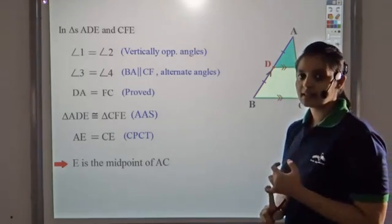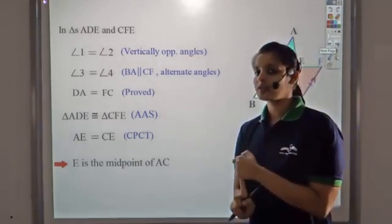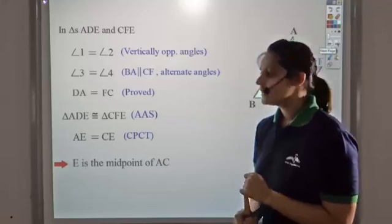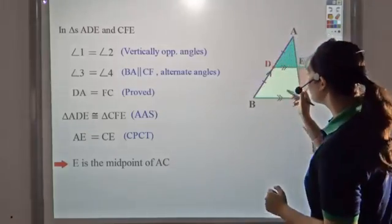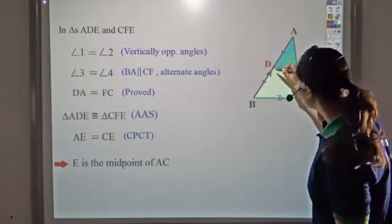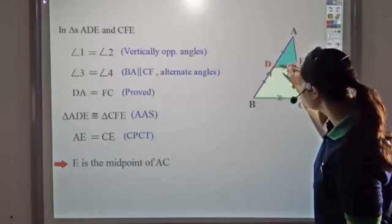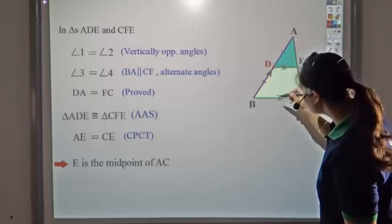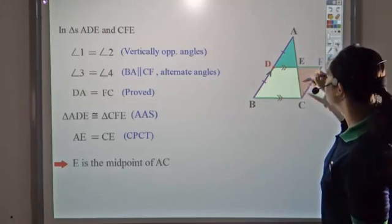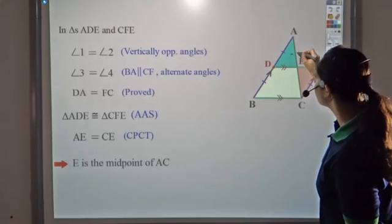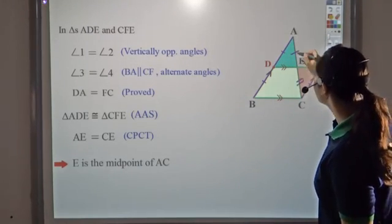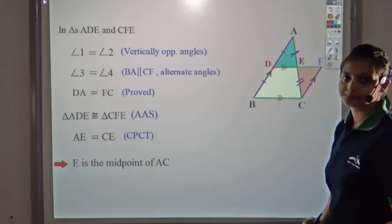So we have seen that the converse of the midpoint theorem also holds — that is, if you draw a line from the midpoint of one side parallel to the second side, then it bisects the third side: AE equals EC.